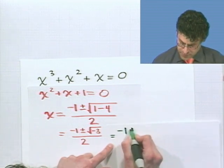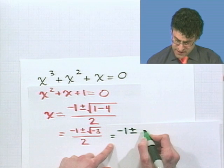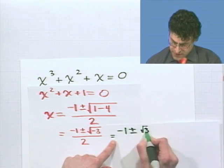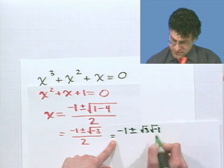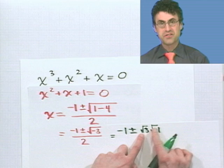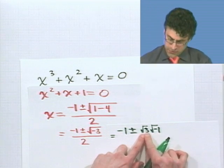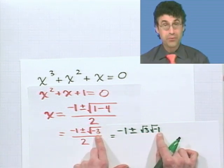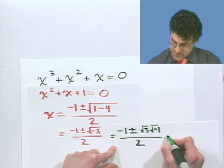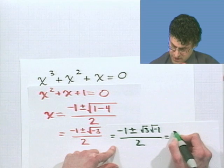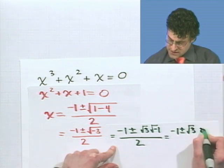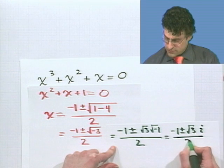I'd write it as negative 1 plus or minus. And what I'll do is, I'm going to write this as square root of 3 times square root of negative 1. Because remember, if we're multiplying, then everything can live under the square root in harmony. And I'd have 3 times negative 1, which would be negative 3. Now, the square root of negative 1, of course, is the imaginary number i. So, I could write this as negative 1 plus or minus the square root of 3. That's a real number. Times i all over 2.